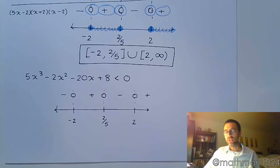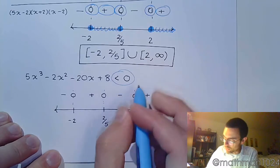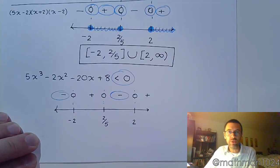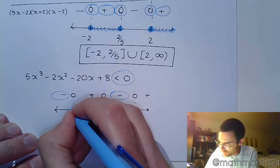If I change the direction of the inequality, that just changes what I'm looking for. If I change it to less than 0, that means I'm looking for those regions where you get negative output values,